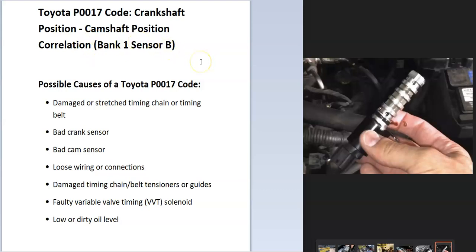The onboard computer uses the crankshaft position sensor and the camshaft position sensor for timing, and it's seen an issue between these two, so troubleshooting is needed. Bank one is always on the side of the engine with the number one cylinder, and sensor B is the second one. Possible causes include a bad timing chain or belt that's slipped a notch or stretched, a bad crank sensor, a bad cam sensor, a loose wiring connection, damaged timing chain guides, a bad variable valve timing solenoid, or low or dirty oil.